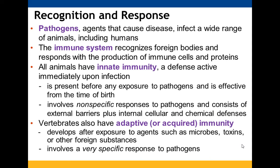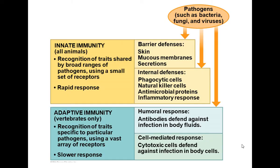Innate immunity is nonspecific — it applies to everything across the board. Adaptive immunity is like a puzzle piece: only certain immune cells are going to recognize or react to certain pathogens. Innate is generic; adaptive is specific.